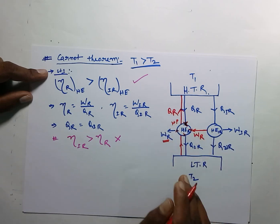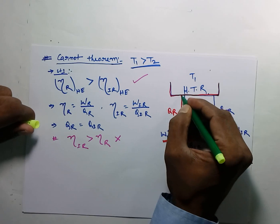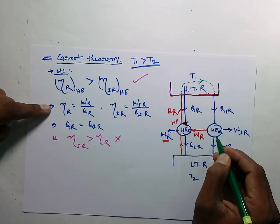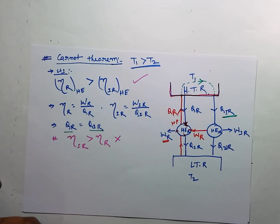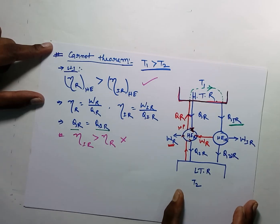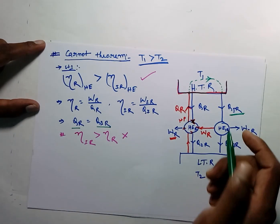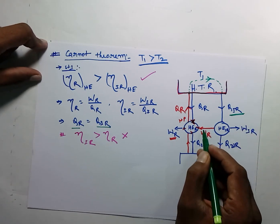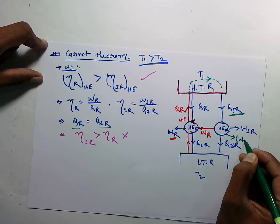The values will remain the same — QR remains the same. Now, if we remove the high temperature reservoir and connect this heat pump to the irreversible heat engine, then the irreversible heat engine will receive the same heat, because we assumed QR equals QIR. The net work obtained from the combined system will be WIR minus WR.